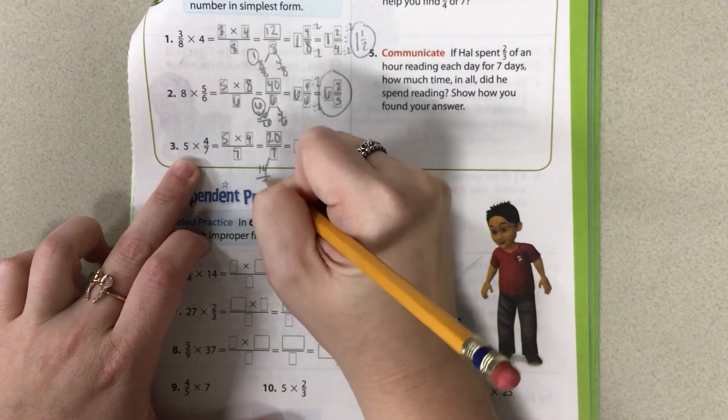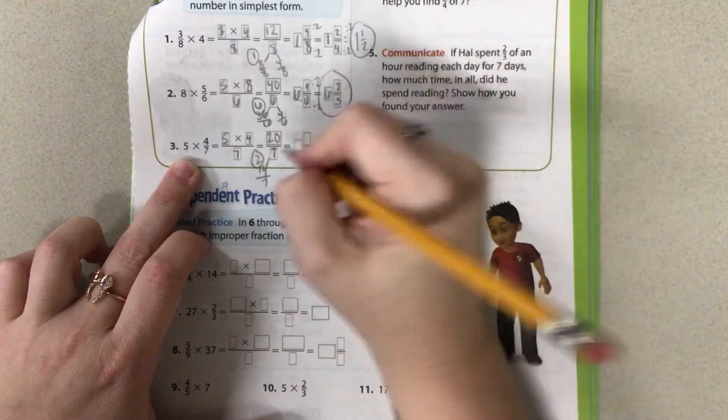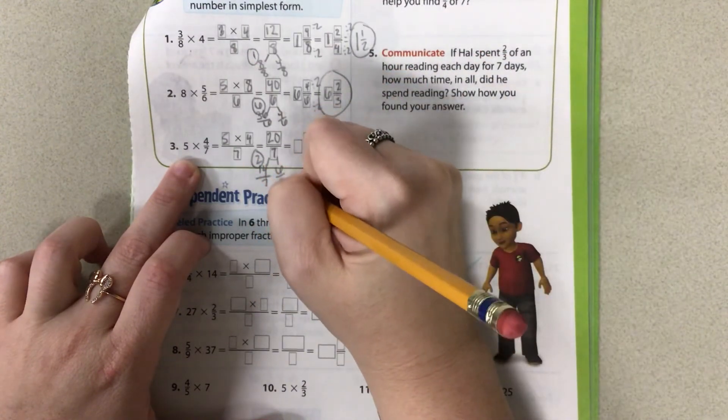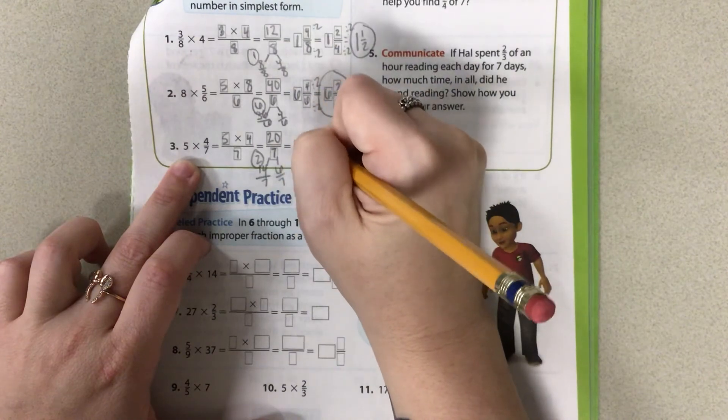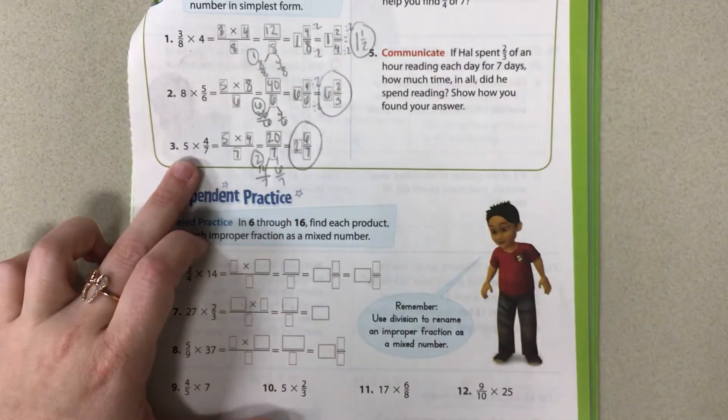5 times 4 is 20 over 7. I can pull out 14 sevens, which is 2 wholes, which leaves me with 6 sevens. So I have 2 and 6 sevenths. And that's my answer.